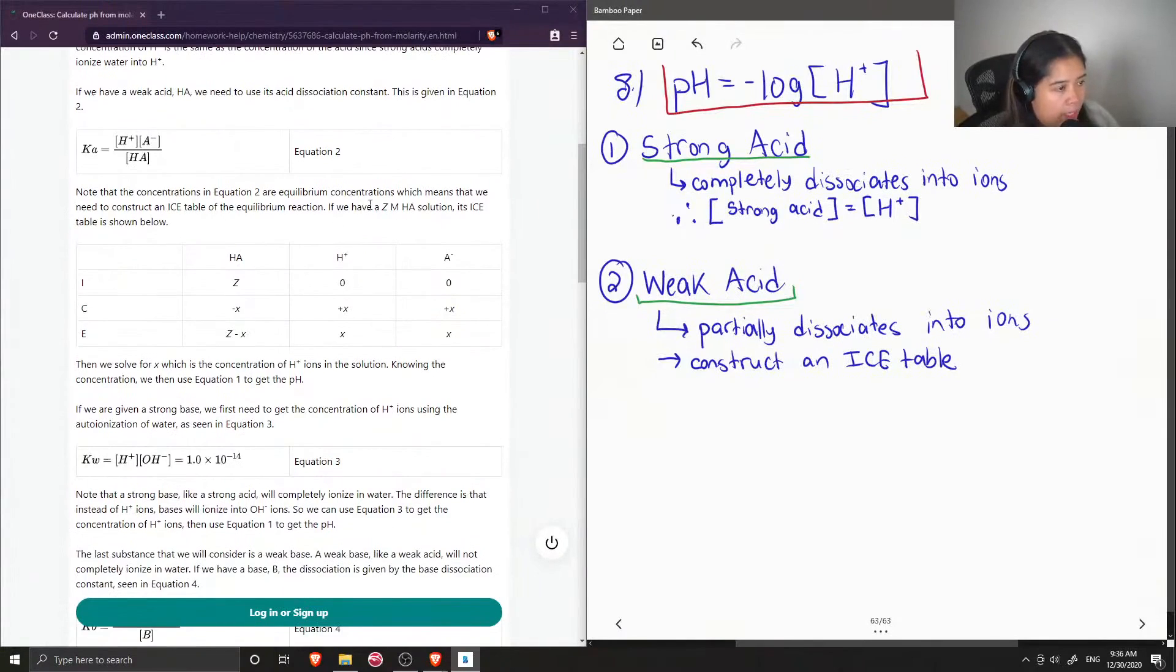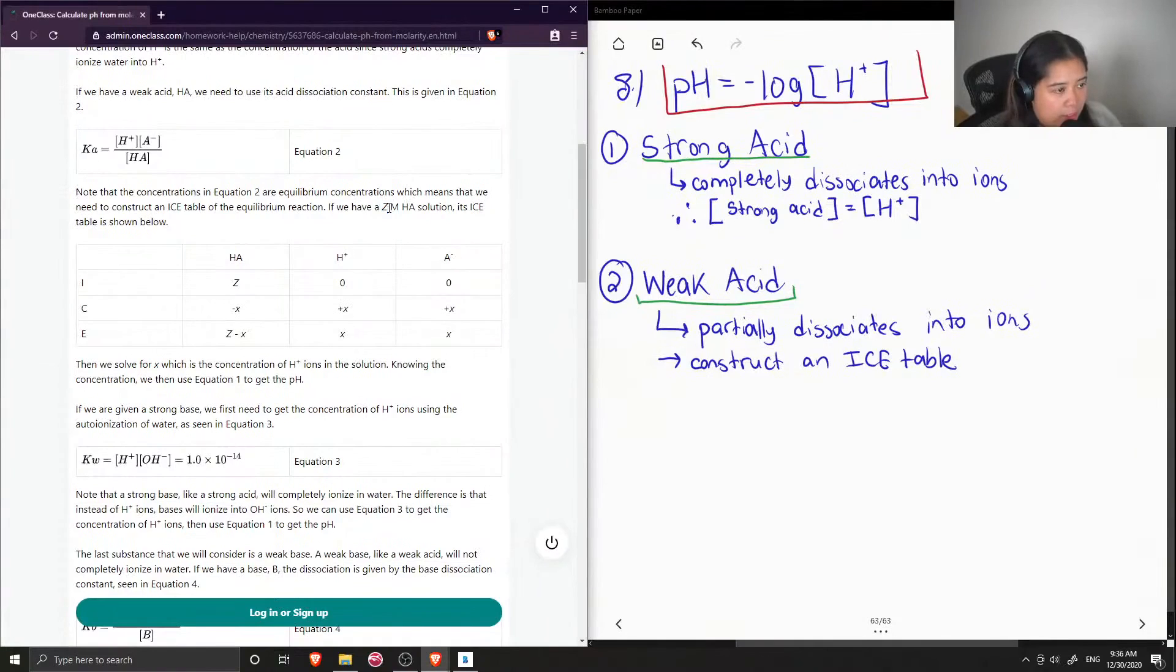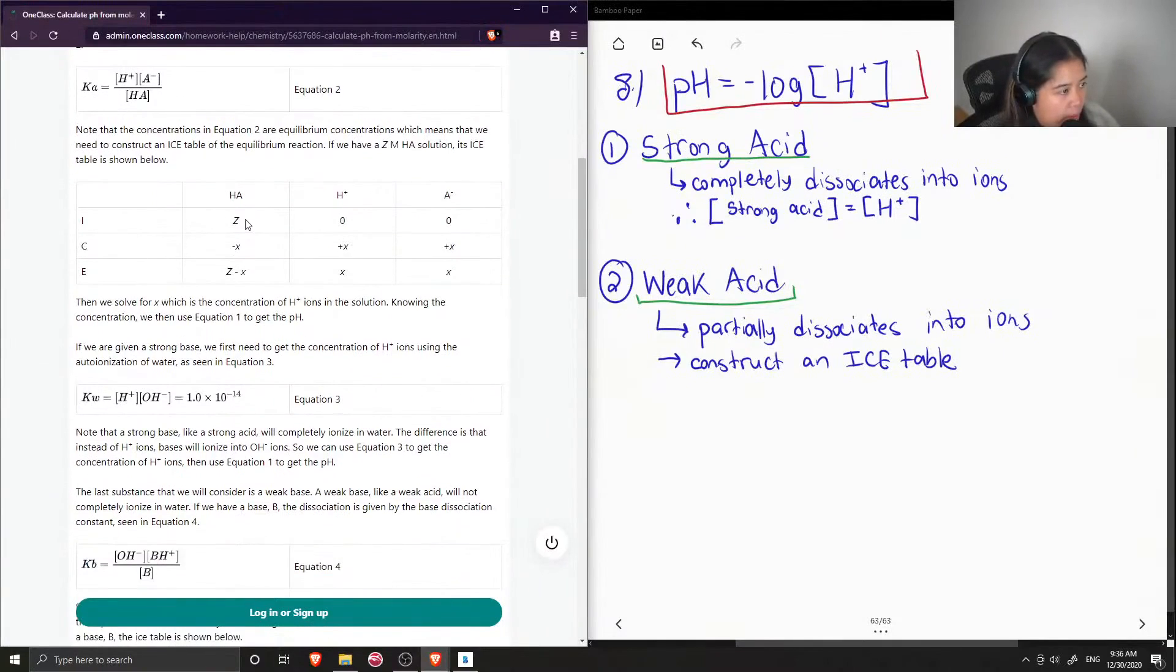If we have ZM, variable concentration of a weak acid solution, its ICE table is shown below. The Z would be our concentration, 0.1 moles per liter, or 2 moles per liter, depending on that. Then they show the change in X.